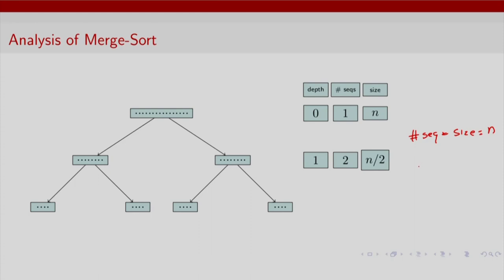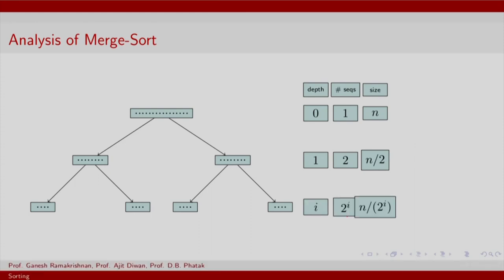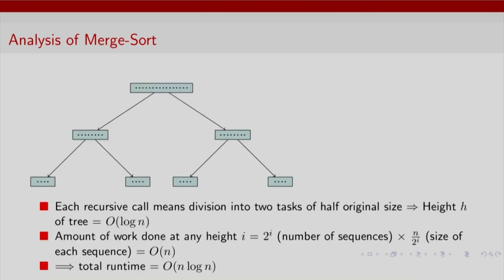Going down at the ith level, you can easily fill in there you have 2 raised to I sequences, because that is the number of nodes at level or depth I in a complete binary tree. The size will therefore be N divided by the number of such nodes or number of sequences. So what we see here is that each recursive call divides the task into 2 tasks of half the original size. Therefore, at any height I, the work done is 2 raised to I number of sequences times N by 2 raised to I. So it is order N at each level.